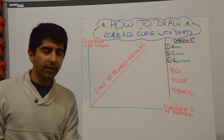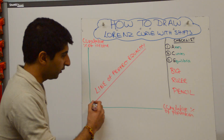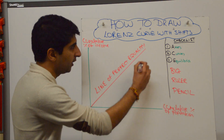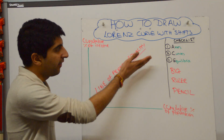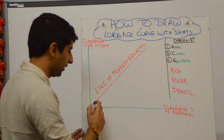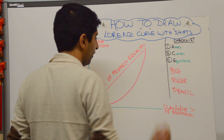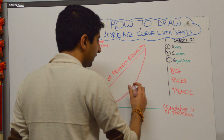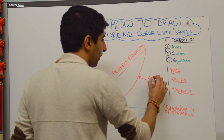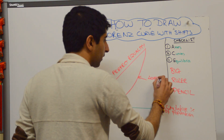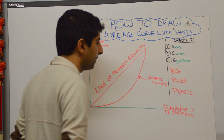Now, you draw your Lorenz curve. Your Lorenz curve is just a curve which goes away from the line of perfect equality and then moves closer towards it — it looks something like that. That is your Lorenz curve, and you just need to label it Lorenz curve 1.